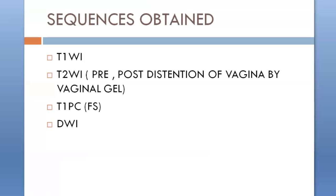The standard sequences obtained were T1-weighted and T2-weighted images, obtained pre- and post-distension of the vagina by vaginal gel for better appreciation of the lesion, T1 post-contrast fat sat, and diffusion-weighted images.